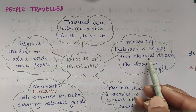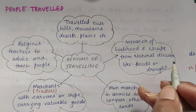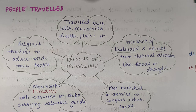Then, they wanted to escape from natural disasters. Imagine in an area there is flood or drought — woh area ab woh reh nahi paayenge wahan par. So they travelled from one place to another to escape the disaster.